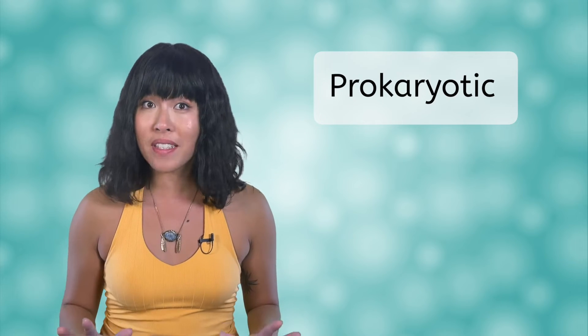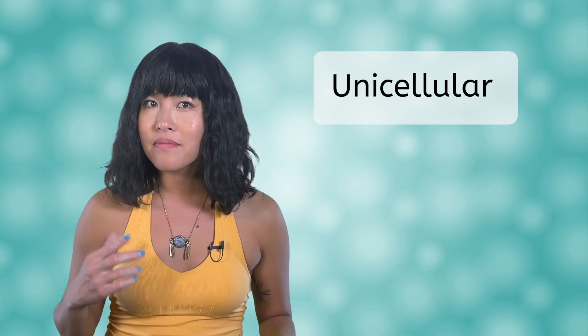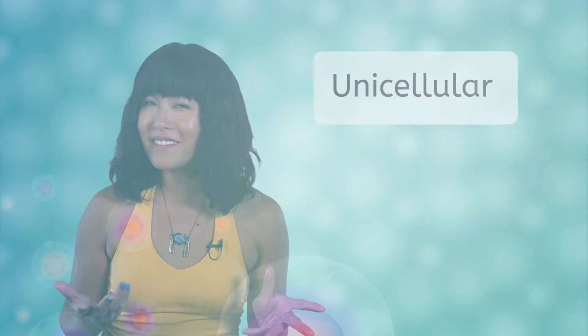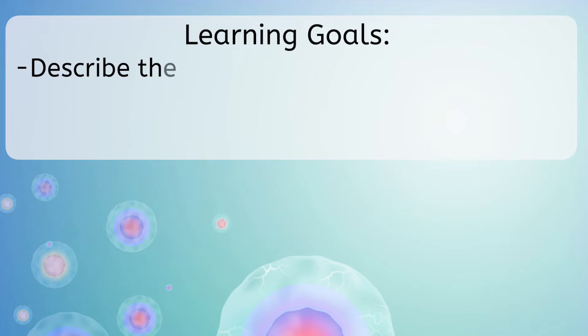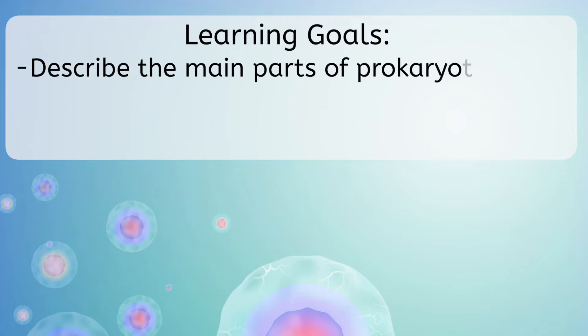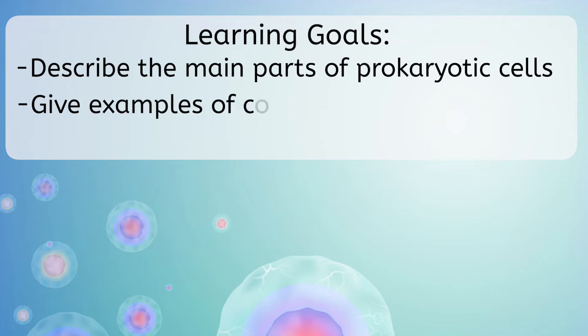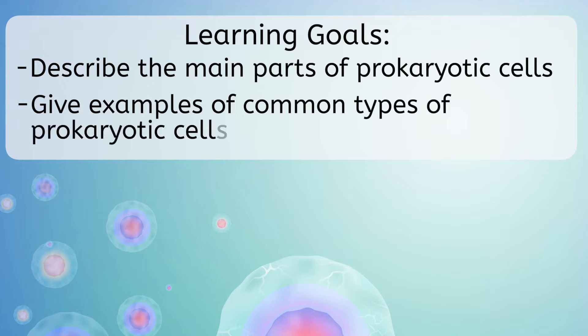I'll give you a hint. These cells are classified as prokaryotic cells. These types of cells have been around for over 3 billion years. They are rather simple in structure and very small — we'll look at just how small later in this lesson. And they are unicellular. Our goals for today: we will describe the main parts of prokaryotic cells and give examples of common types of prokaryotic cells.